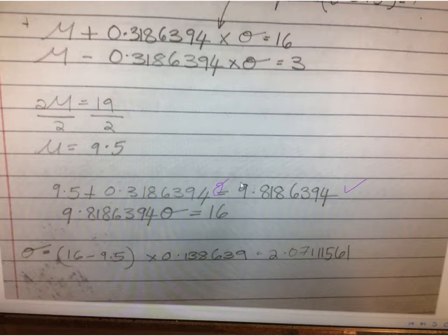this line. And then what you want to do is use BEDMAS and first bring the 9.5 over to the right-hand side. And so you'll have an equation with the 0.3186394